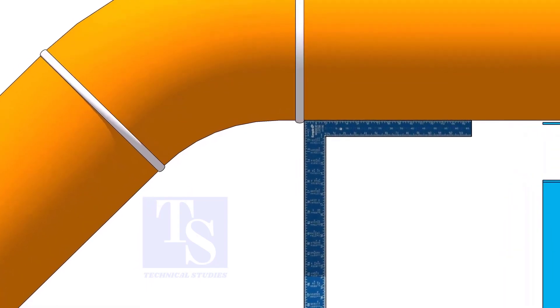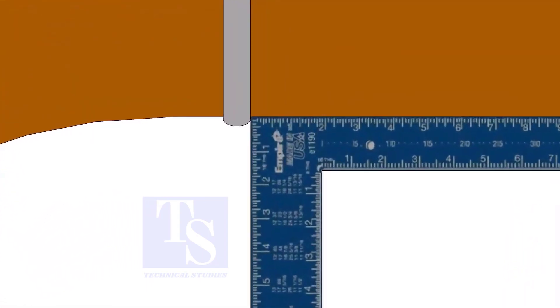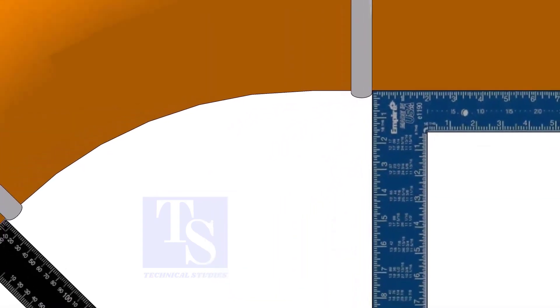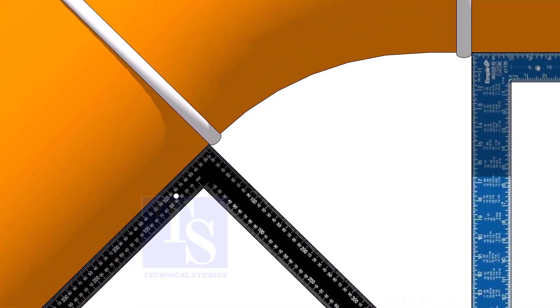Hold one right angle on the pipe just outside the weld joint, as shown. Hold another right angle on the other pipe. Make sure both the right angles are sitting on the center of the pipe.